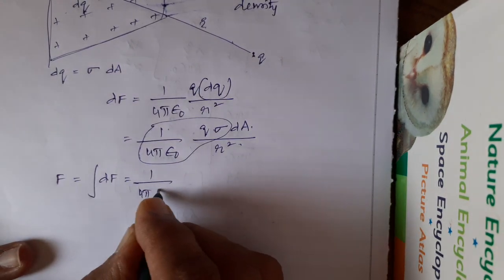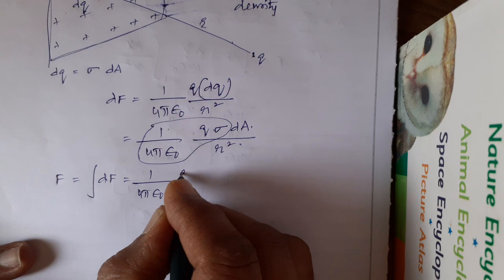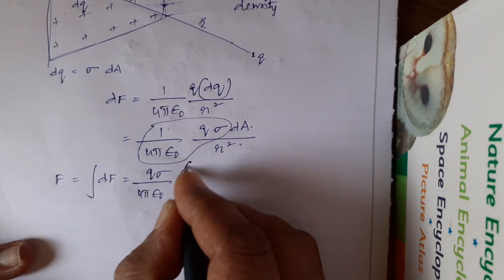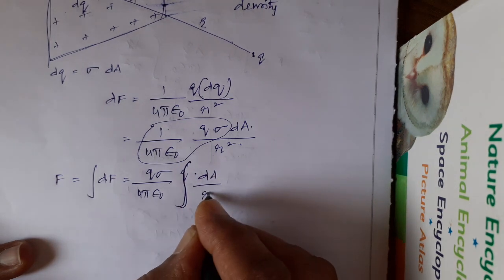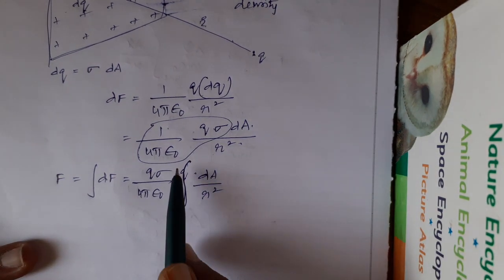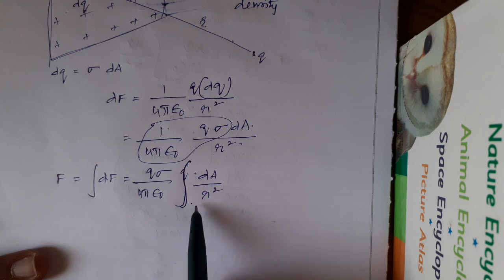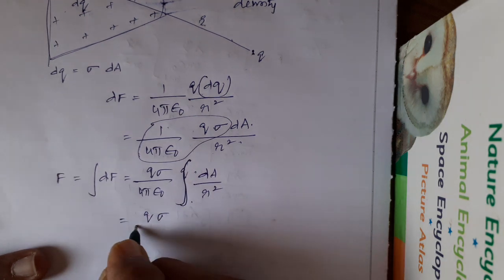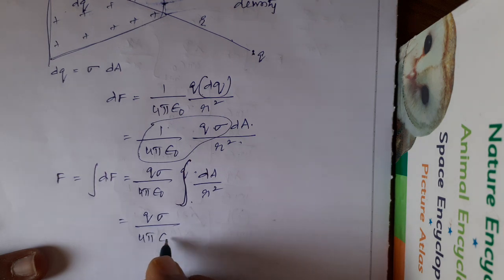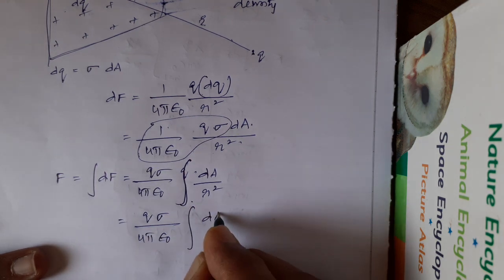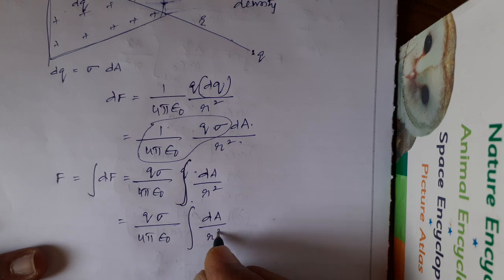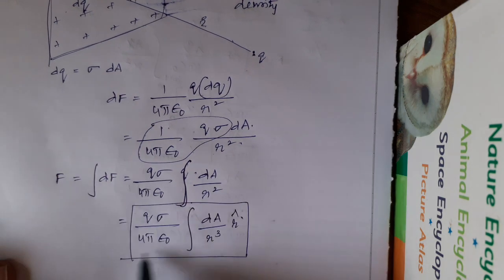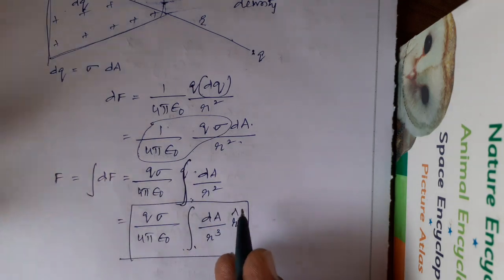So 1 upon 4 pi epsilon naught Q sigma, I write Q sigma here. Here, I put integration dA by R square. You don't come across vector notation. So that we can go for Q sigma by 4 pi epsilon naught dA by R cube into R cap. Here, the limits of integration will vary from case to case.